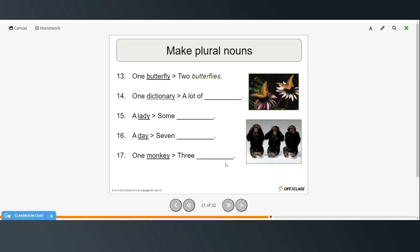Okay, so try to make the plural forms of these nouns. So one butterfly, two butterflies. One dictionary, a lot of dictionaries. Again, because we have a consonant plus the Y, so we change the Y to an I and add E-S. A lady, some ladies, I-E-S. A day, seven days. D-A-Y-S. Because we have a vowel before the Y, so that's why we just add the S. And monkey would be three monkeys.